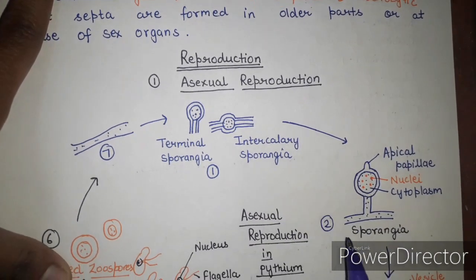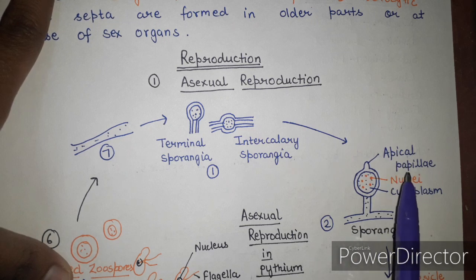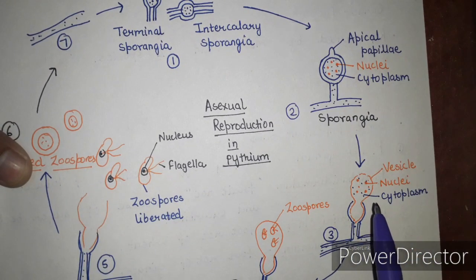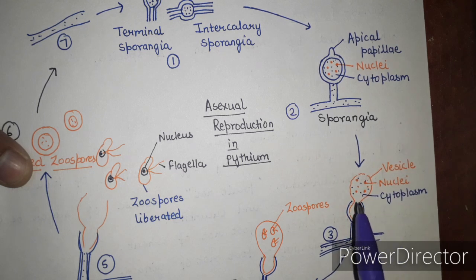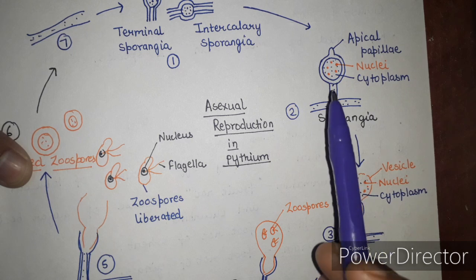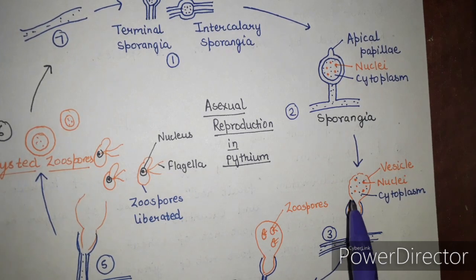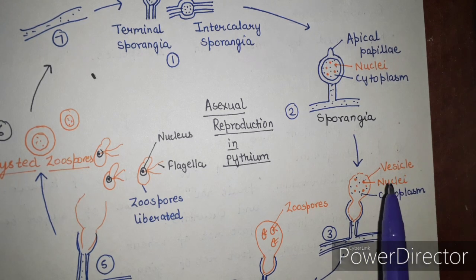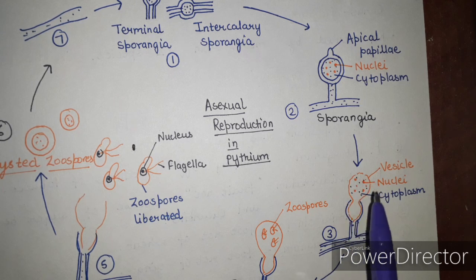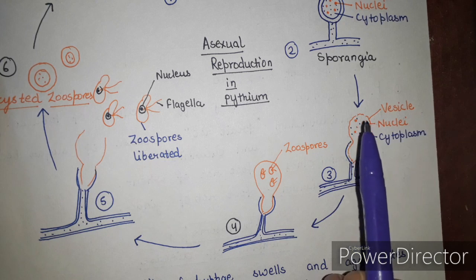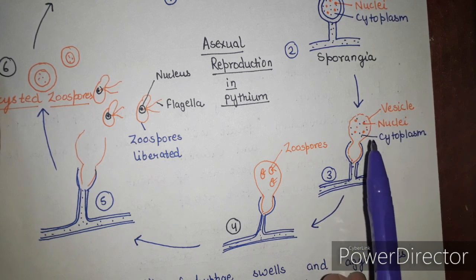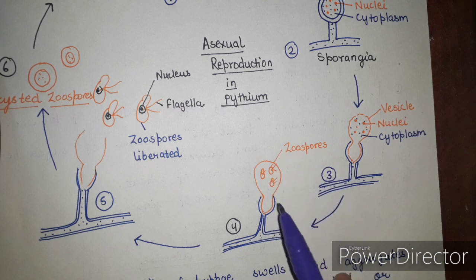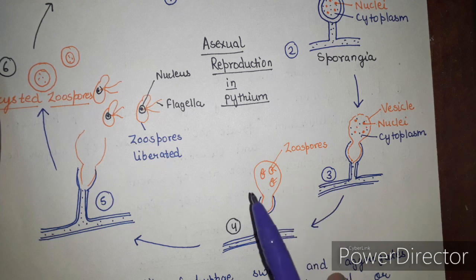The sporangia has an apical papillae and contains nuclei along with cytoplasm. During asexual reproduction, the outer wall of the sporangia bursts at the point of the apical papillae, and the inner wall bulges out as a bag-like structure called the vesicle. The nuclei and cytoplasm migrate into the vesicle, then get surrounded to form small kidney-shaped zoospores, which have two flagella.